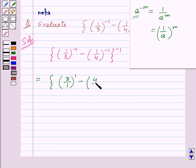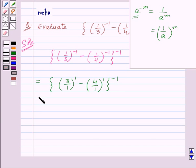This is equal to 3 minus 4, to the power minus 1, which is minus 1 to the power minus 1.